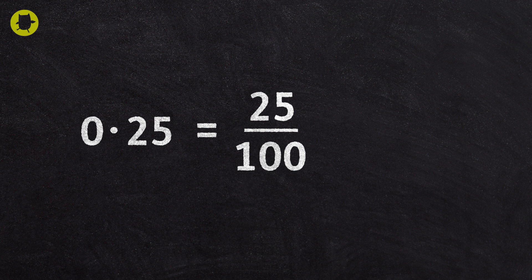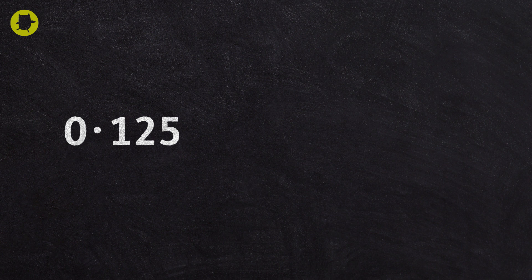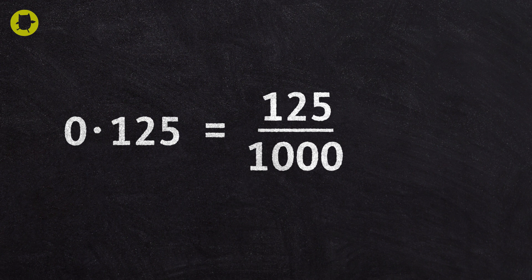0.25 is equal to 25 hundredths, which is equal to one quarter. 0.125 is equal to one hundred and twenty-five thousandths, which is equal to one eighth.